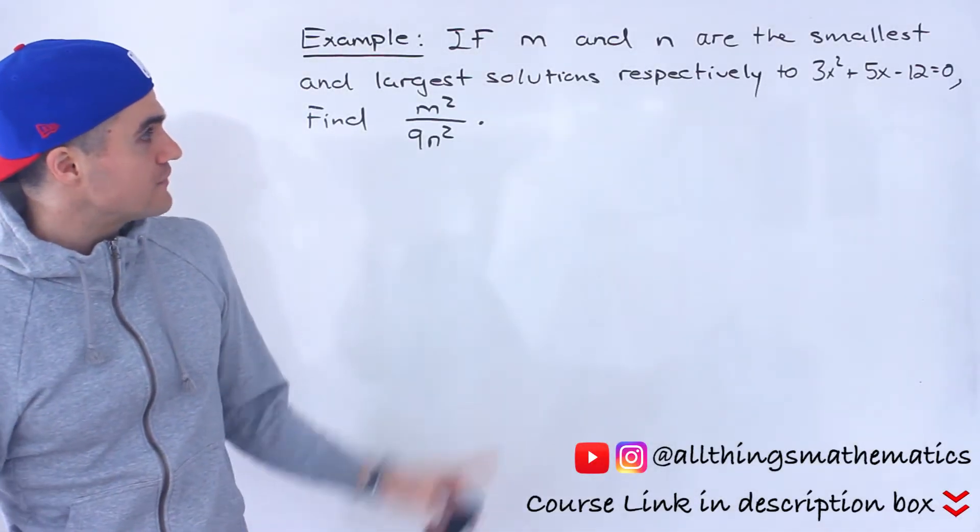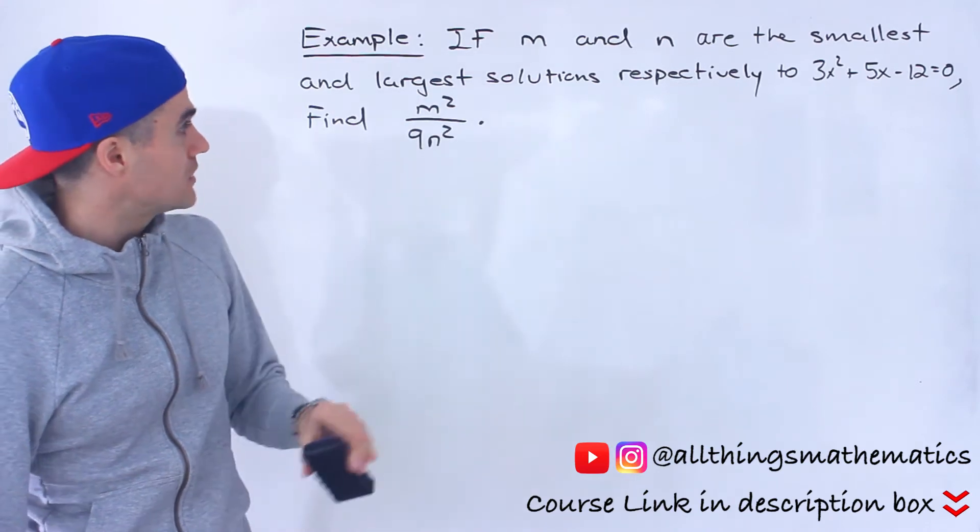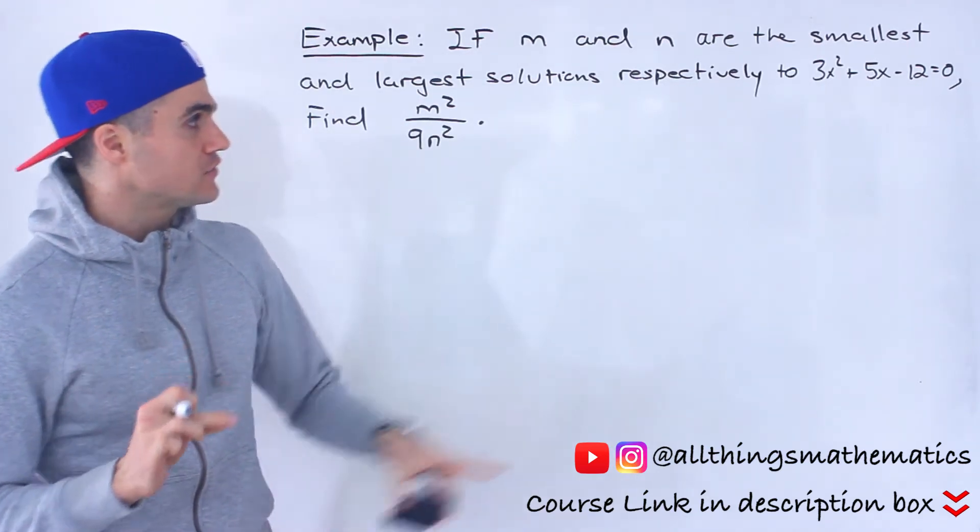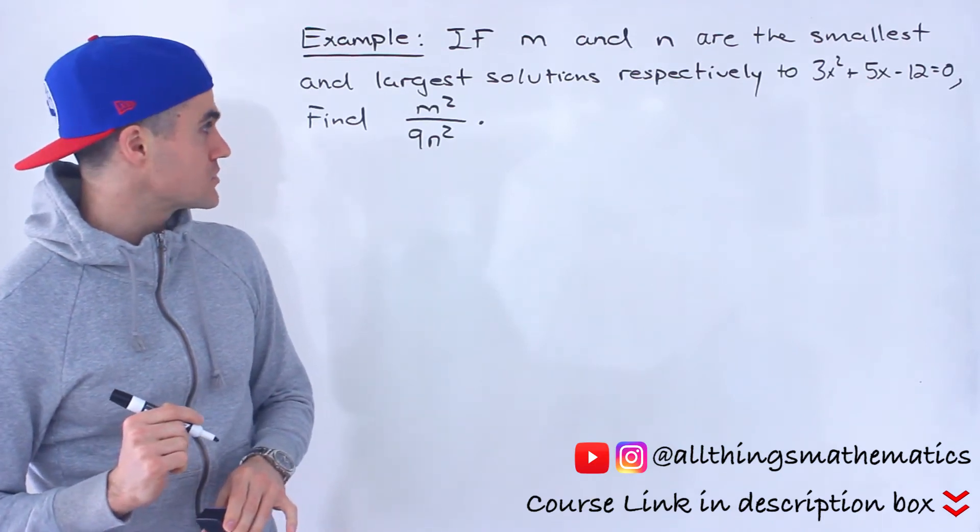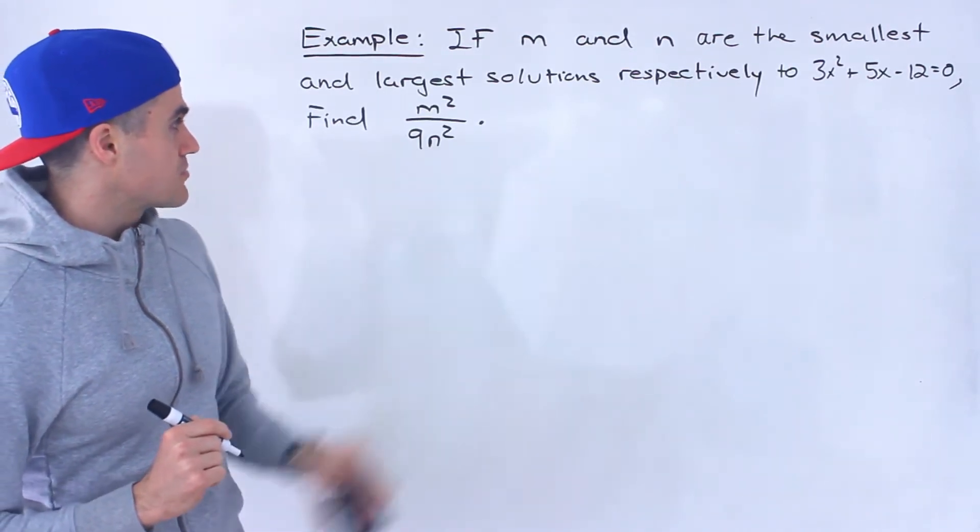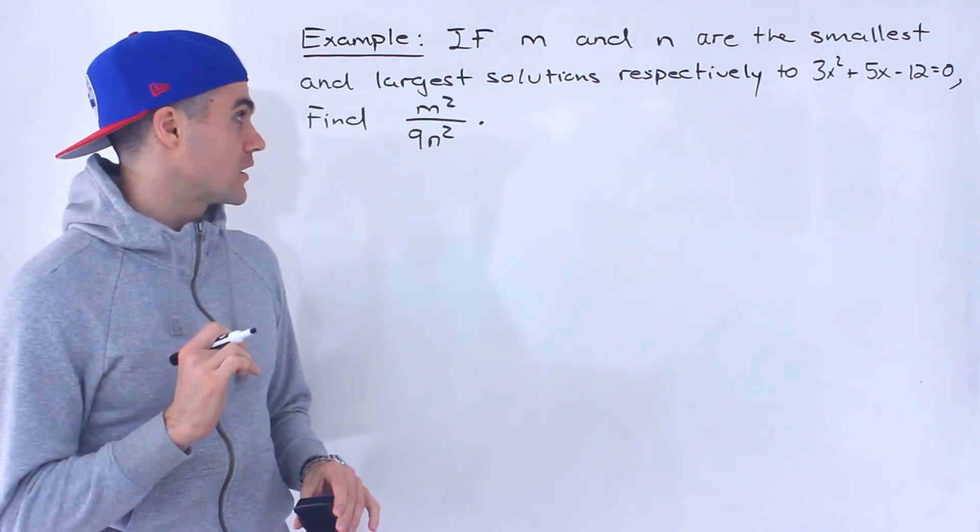In this question, we're told that if m and n are the smallest and largest solutions respectively to that quadratic equation, 3x squared plus 5x minus 12 equals 0, we have to find this expression, m squared over 9n squared.